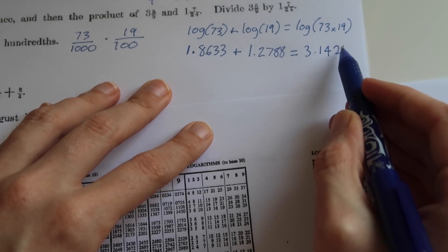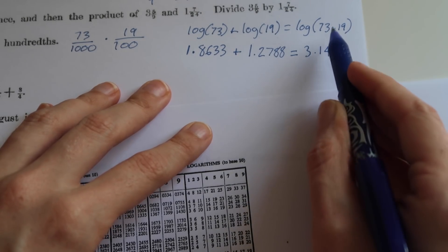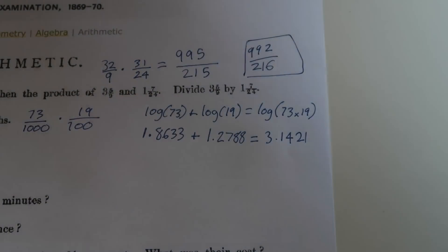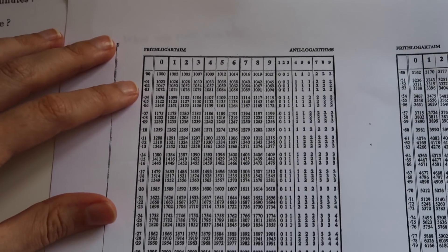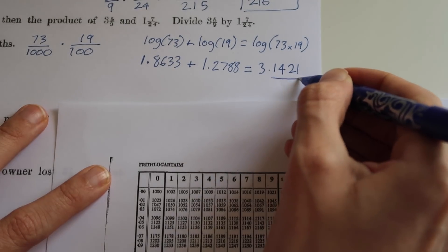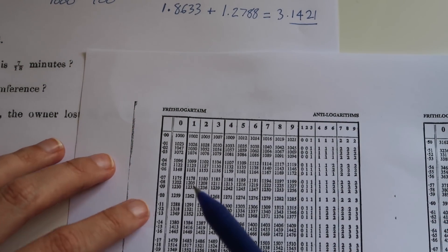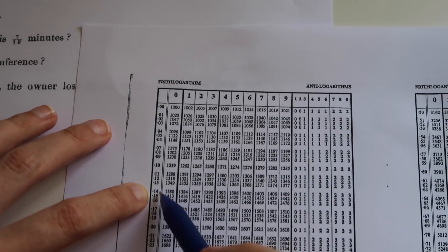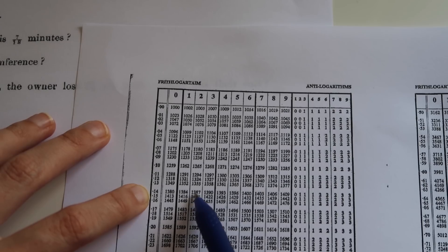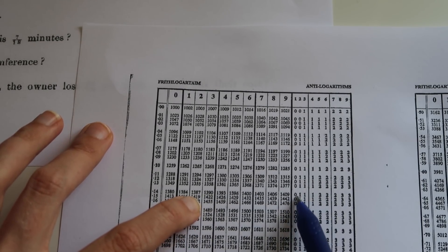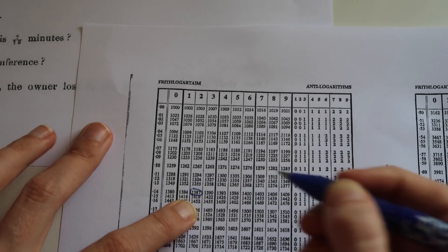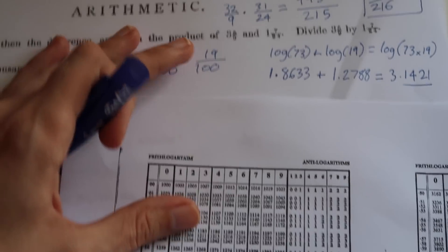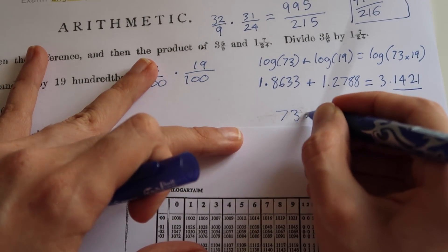Okay, and that means that if we take the antilog of this number here, we should end up with the product that we wanted. So we get another table, which is our antilog table. You better hope you've got all these handy. And we're going to look up 3.1421, but we're actually just going to look up the part that's after the decimal point in here. So 0.142, 0.14, 2, and then we're going to add on a 1, which is adding on a zero, so it's just going to be 1387.